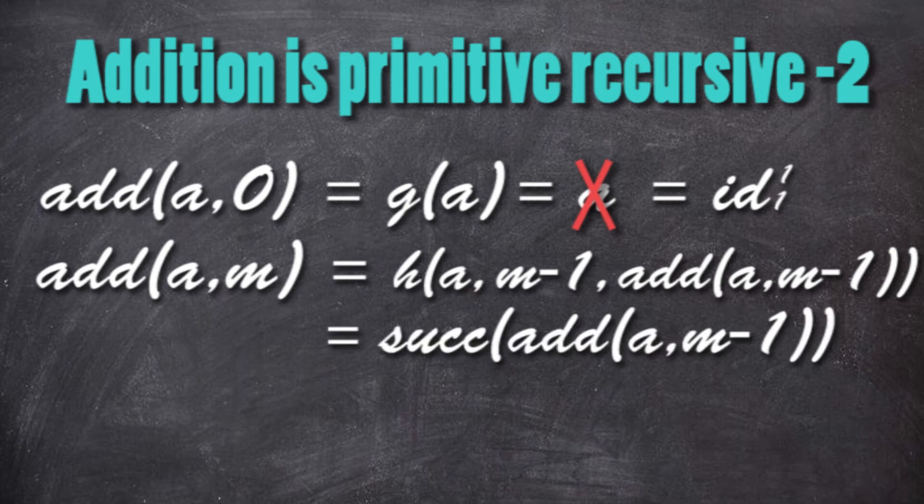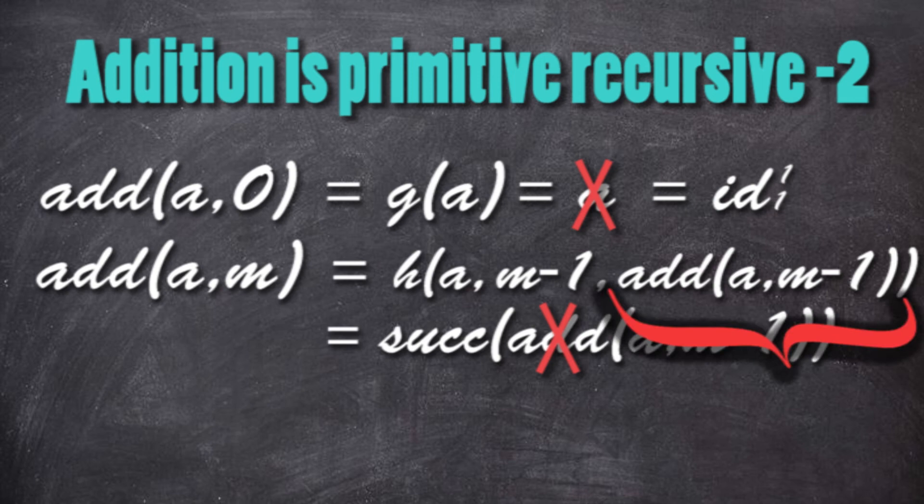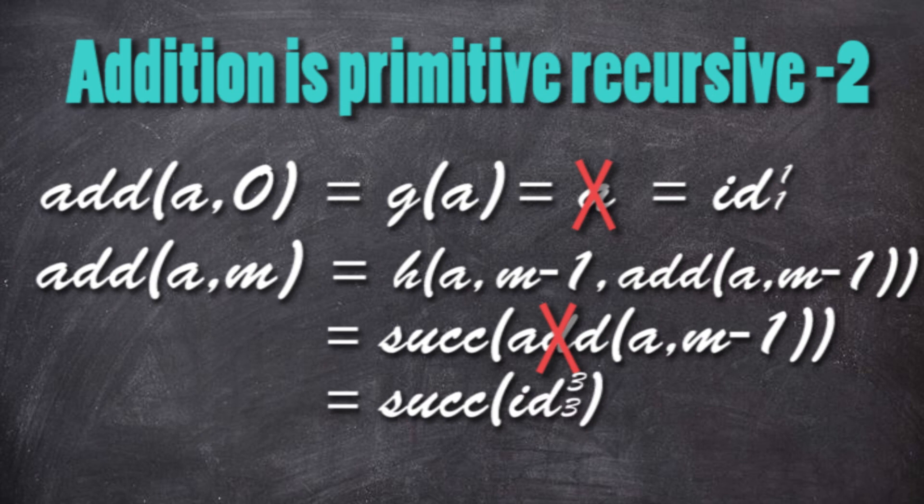This is equal to the successor of the state before, but we cannot write the addition, which is not in the base of our primitive recursive functions. The addition of A and M minus 1 is the third parameter of the function H that takes 3 parameters, so we can write the successor id₃³.